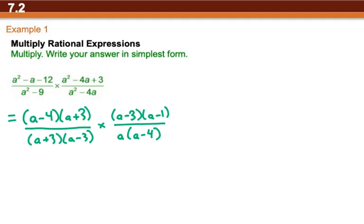Once we've got the factoring done, we need to look for things we can cancel. It doesn't matter if we're going diagonally or straight vertically, as long as we're cancelling one from the numerator and one from the denominator, that's what we need to do.